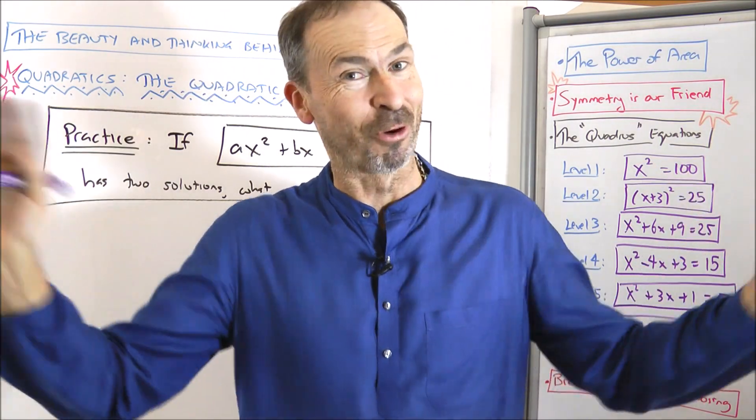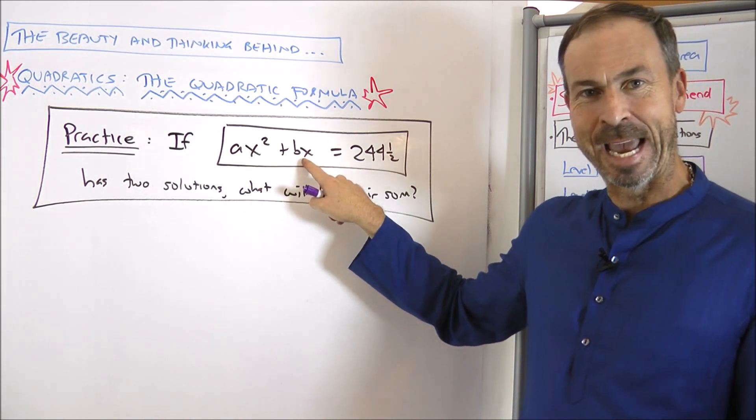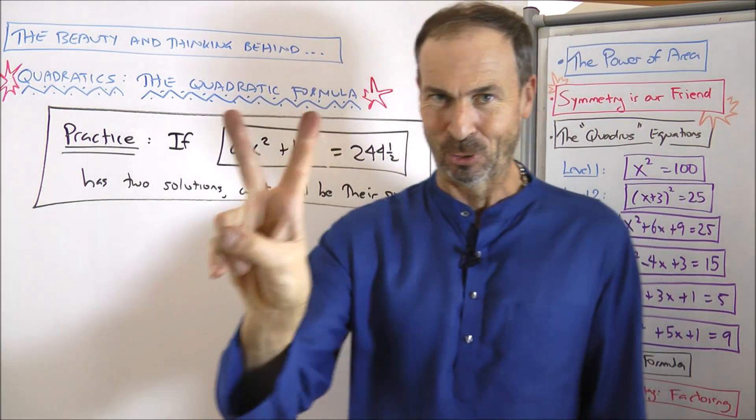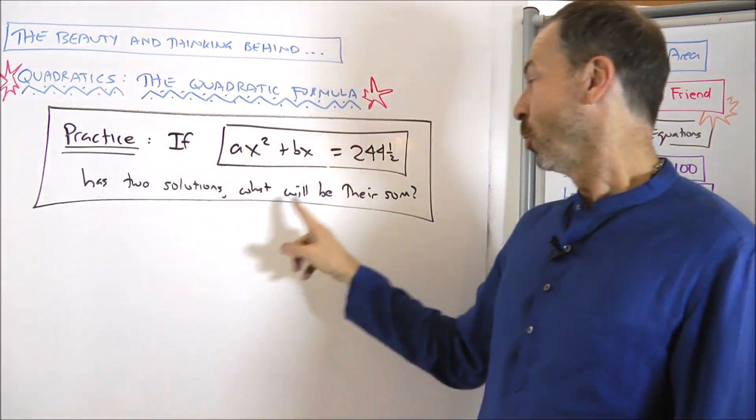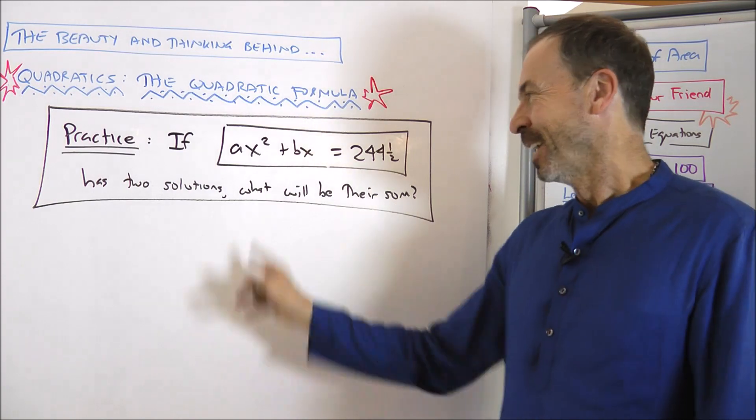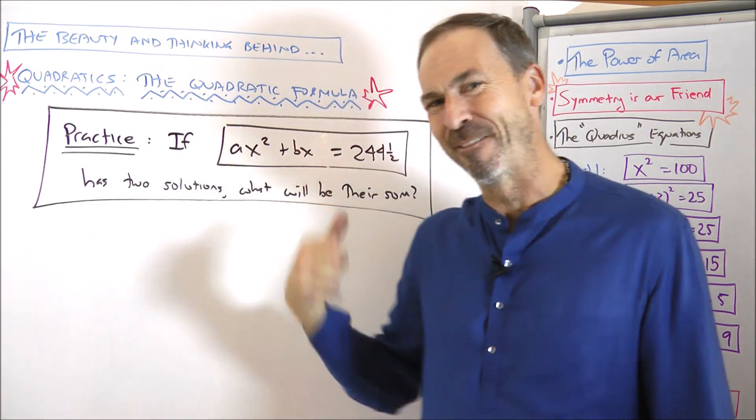Okay, here's another strange question. If ax squared plus bx equals 244 and a half turns out to have two solutions, my question to you is what would be the sum of those two solutions? In fact, I'll let you think about this one and then I'll do this answer too. I'll be back in a moment, but you try it first.